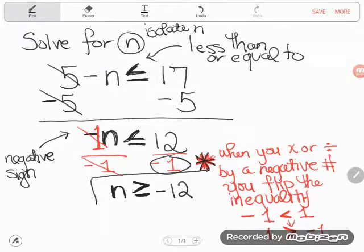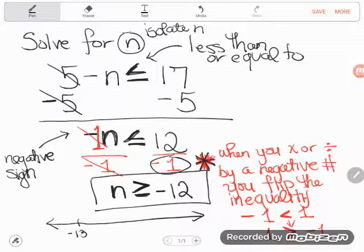And so your final answer is actually n is greater than or equal to negative 12. And if you had to graph this on a number line, which sometimes could come up in class or on the GED, you would just have to at least make sure that negative 12 appeared somewhere on your number line.